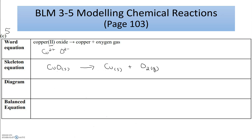In our diagrams, we're going to use colors to represent each element, because it's easier to see the balancing. I'm using blue for copper and red for oxygen. In my ionic compound I have one copper ion and one oxygen ion, so I draw a blue circle paired with a red circle to represent copper 2 oxide on the reactant side. On the product side I draw one copper atom and one oxygen molecule with two red circles together.